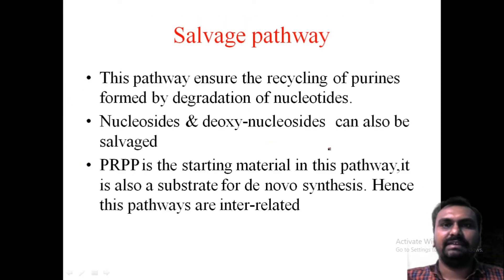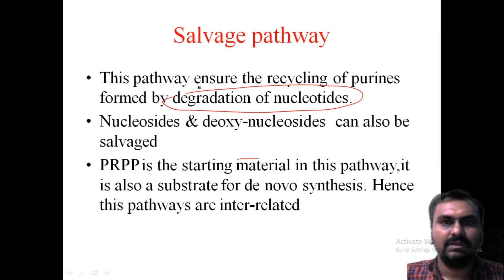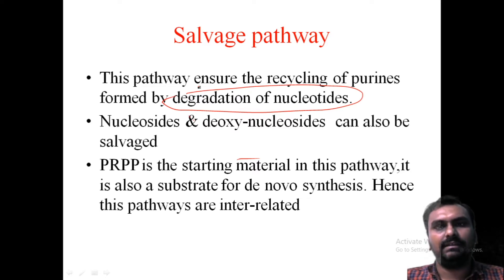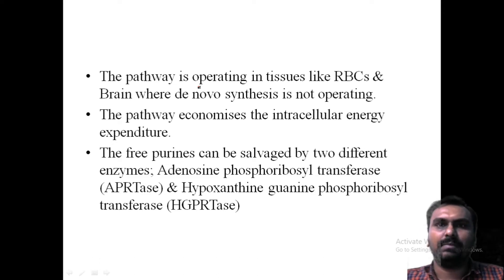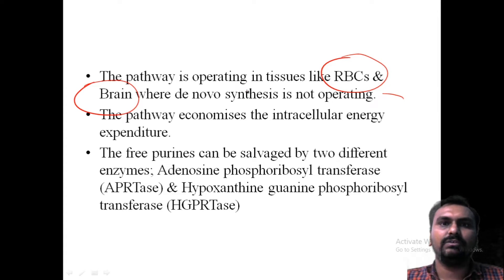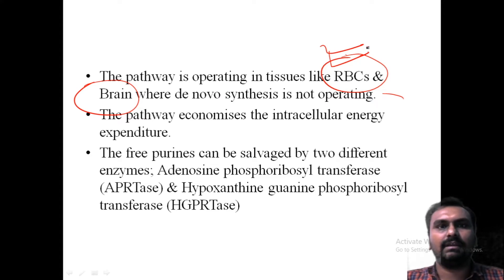Coming to the salvage pathway — this pathway ensures recycling of purines formed by degradation of the nucleotides. Nucleosides and deoxynucleosides can also be salvaged. PRPP is the starting material in this pathway, and it can also be a substrate for de-novo synthesis; hence this pathway is interrelated. This pathway operates in RBC and mainly in the brain, where de-novo synthesis is not operating. The pathway economizes the intracellular energy expenditure.